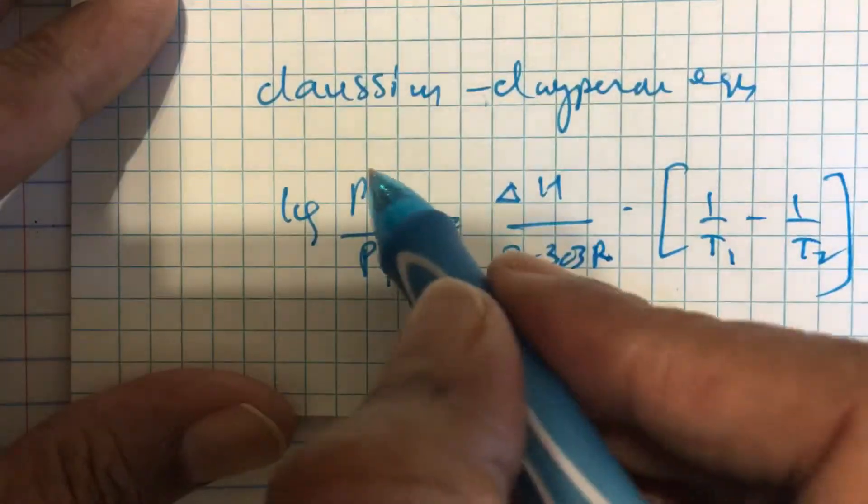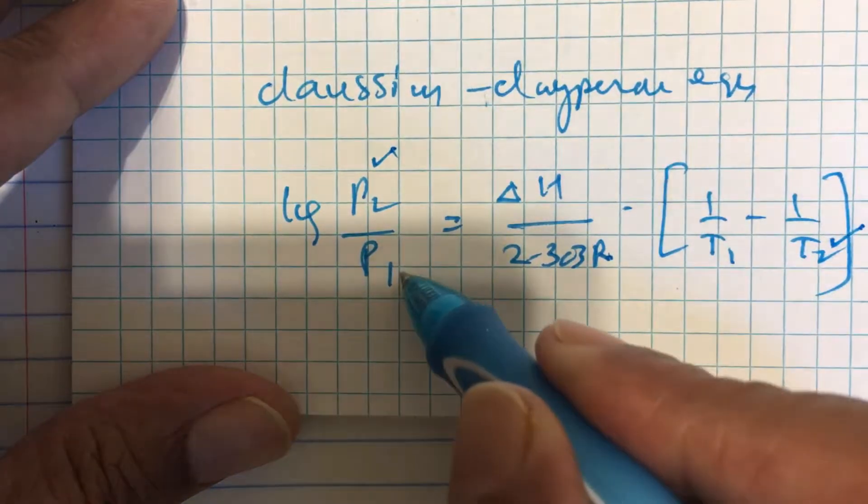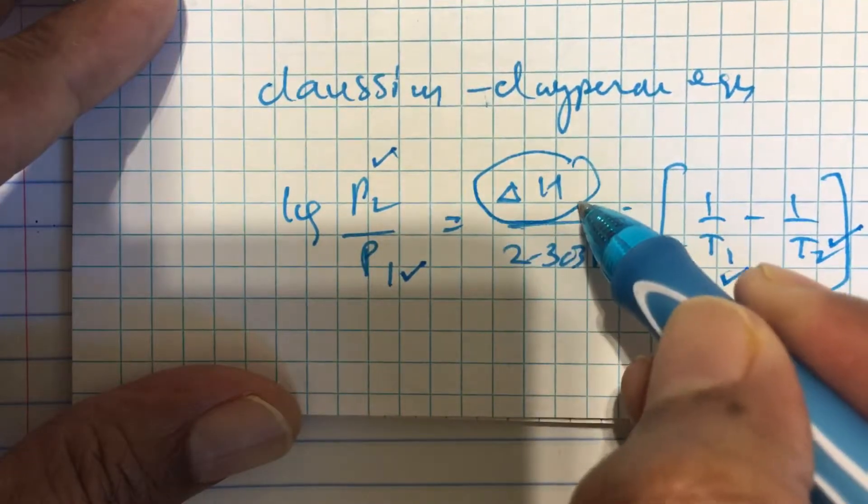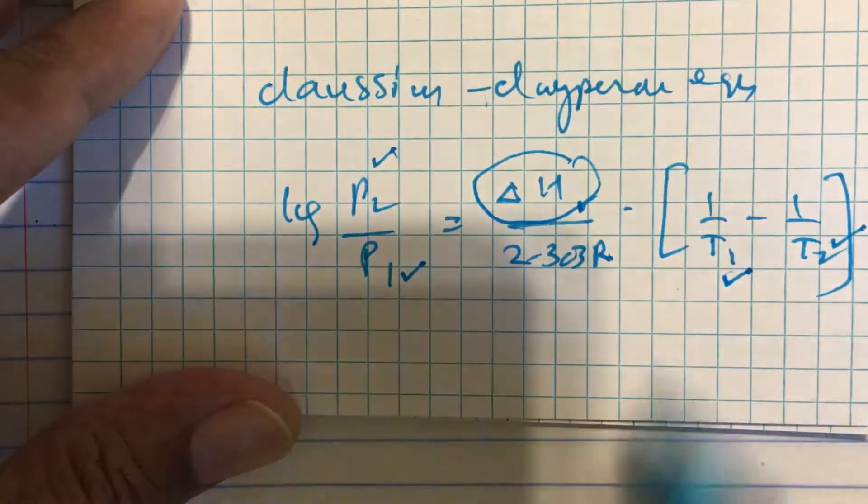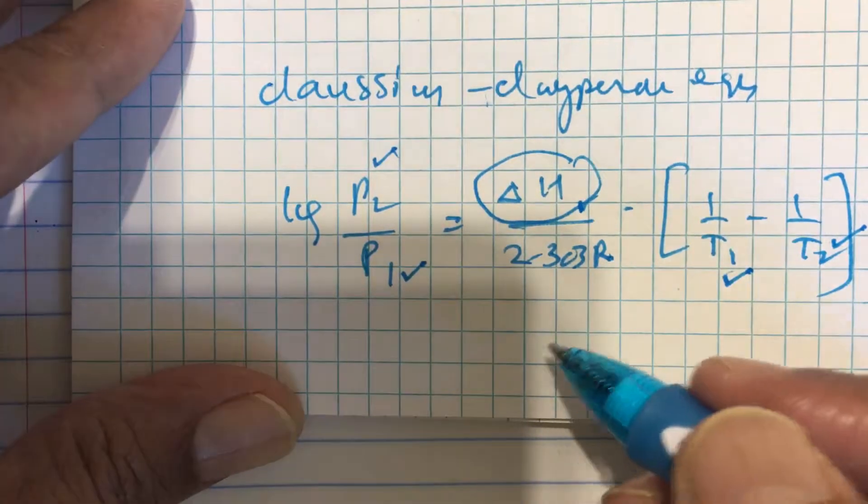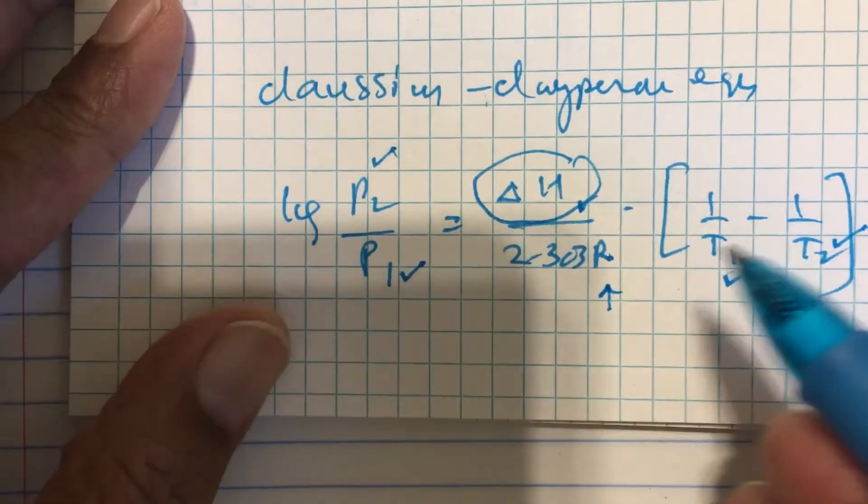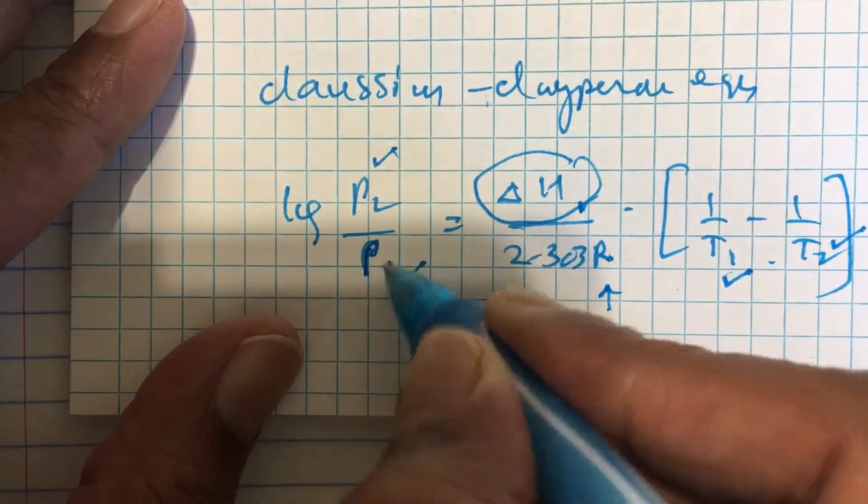In this, p2 is vapor pressure at temperature T2, p1 is vapor pressure at temperature T1, delta H is called latent heat of vaporization or enthalpy of vaporization, and R is universal gas constant. So if you can measure the vapor pressure of a liquid at two different temperatures,